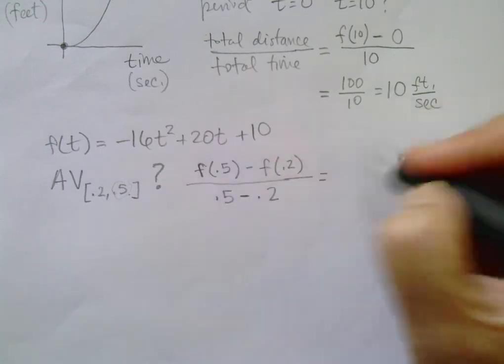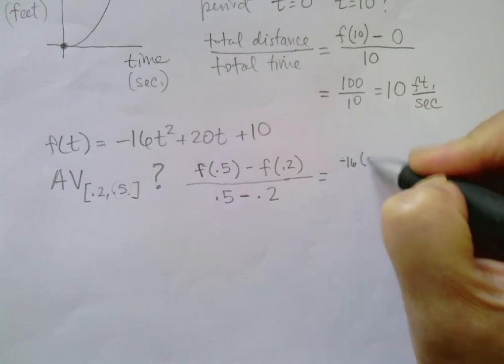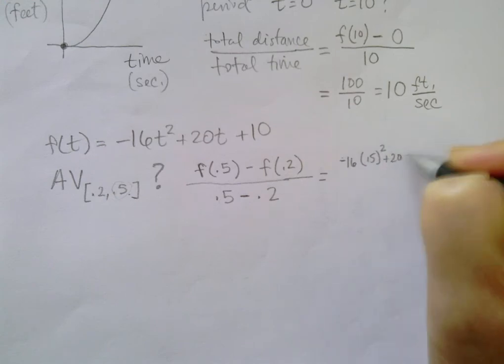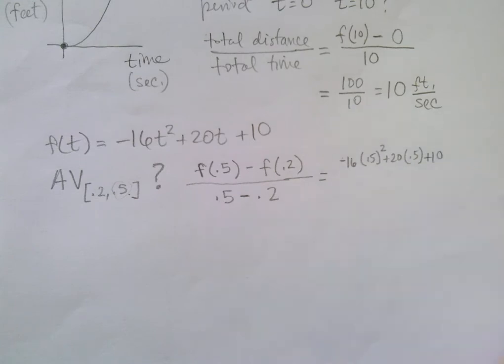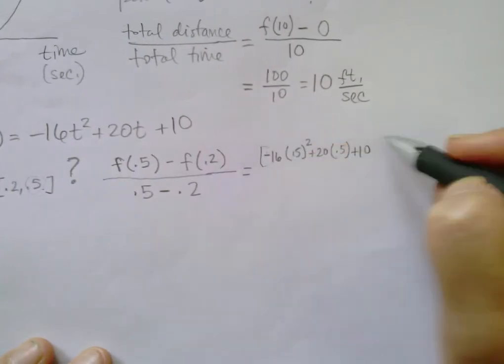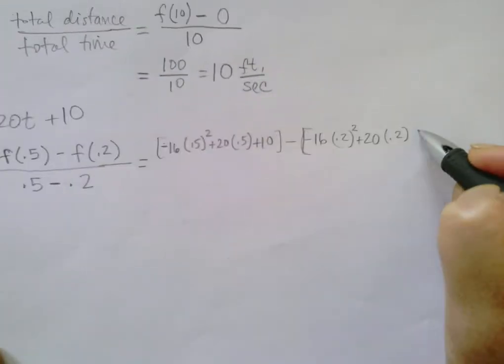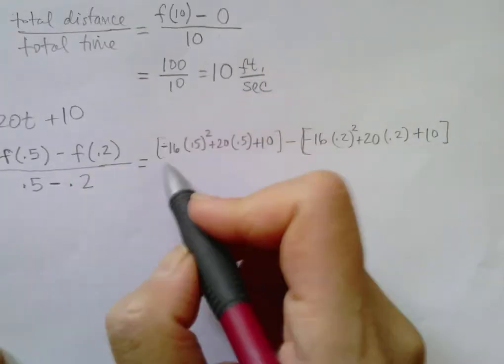So you'd have to compute all of this. That is negative 16 times 0.5 squared plus 20 times 0.5 plus 10, that's on one end, all minus negative 16 times 0.2 squared plus 20 times 0.2 plus 10. That's all in the numerator.